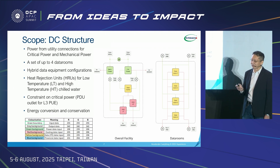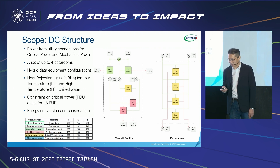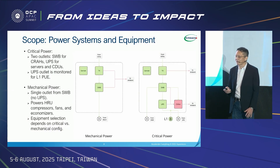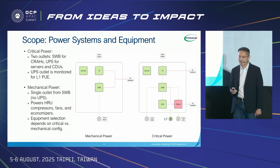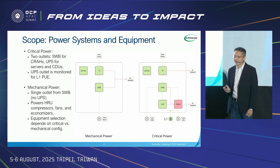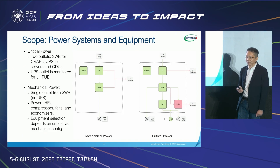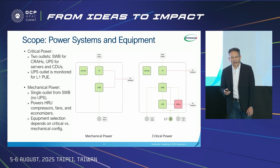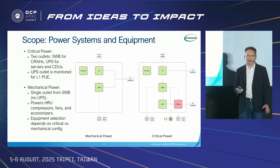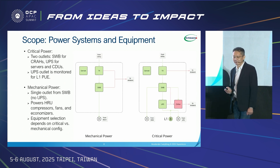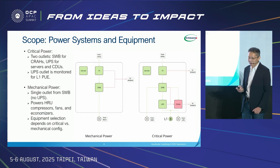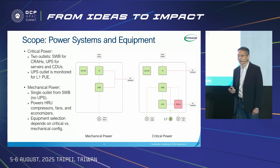This table shows the purpose of each cell in the worksheets along with color reference. The critical power has two power outlets: one from the main switchboard and one from the UPS. The UPS output is for air cooling, known as CRAC. The UPS outlet is reported for L1 PUE assessment. The mechanical power has a single outlet from the switchboard and feeds the HRU compressors, fan sets, and economizers. Power equipment is selected based on critical and mechanical power configurations.